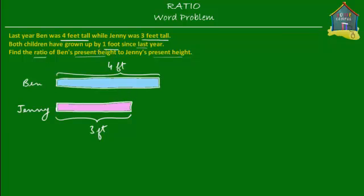Now both children have grown up by one foot since last year. So Ben was four feet tall last year, then he grew up by one more foot this year. So let's suppose that this is one foot over here. Then this yellow one plus the blue one together is five feet — Ben's present height is five feet: four feet from last year plus one foot that he has grown up. So his current height is five feet.